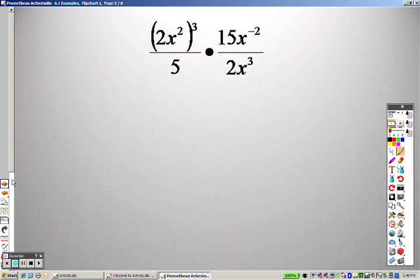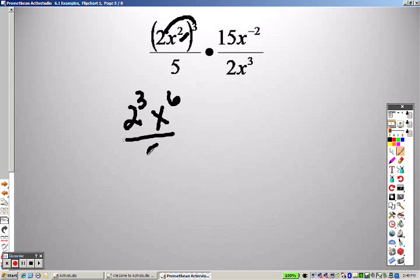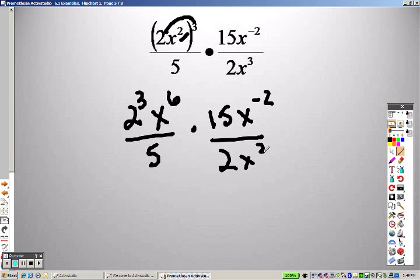Okay, let's take a look at another. Now, because of parentheses, we have to do those first, so I take that through, so that's 2 cubed, and that is, because of parentheses, that is x to the 6th over 5 times 15x to the negative 2 over 2x cubed.